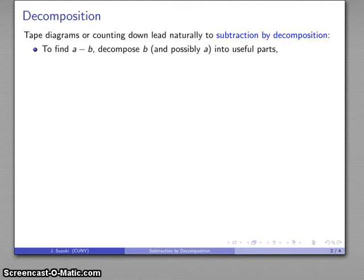And the basic idea is that if I want to find the value of the subtraction A minus B, what I'm going to do is break B and possibly A down into a number of useful parts. And then at that point, I'm going to remove the parts of B from the parts of A.